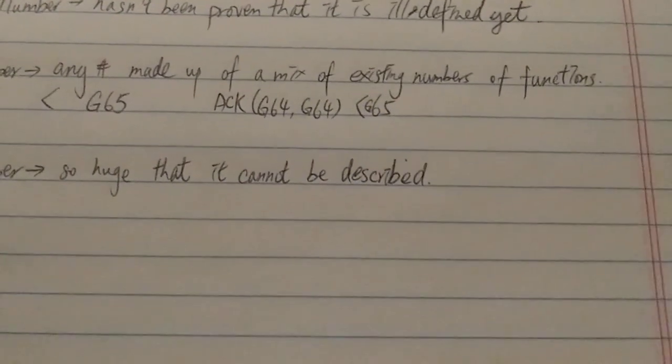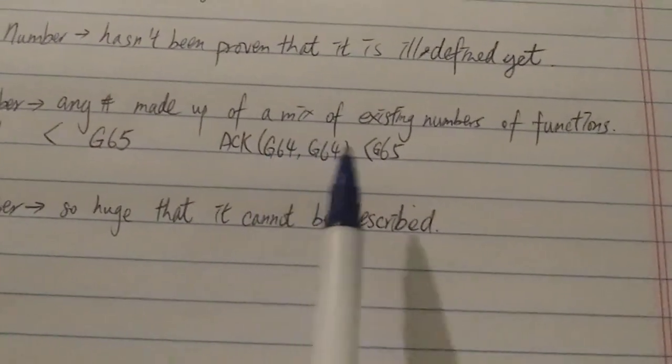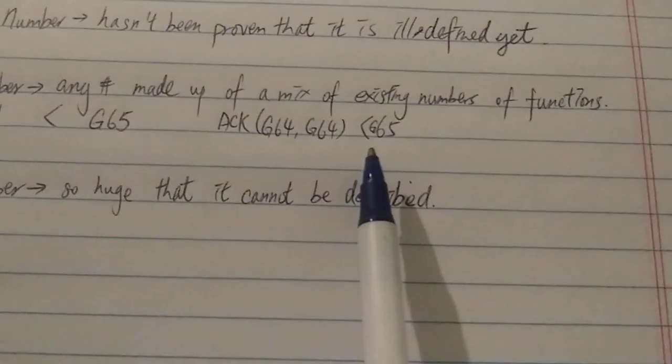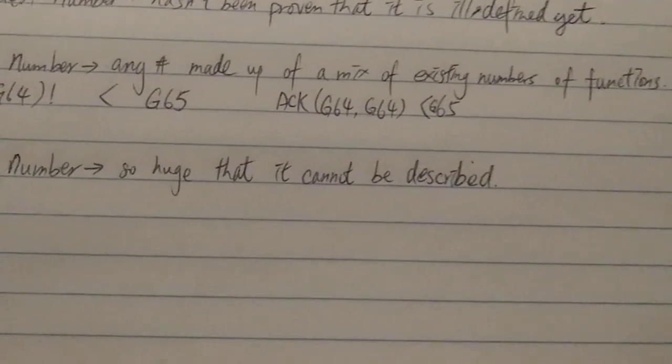The Ackermann function is a very fast-growing function and you put G64 in it. And they think it's a very big number. But actually, this is actually smaller than G65.